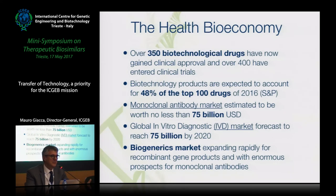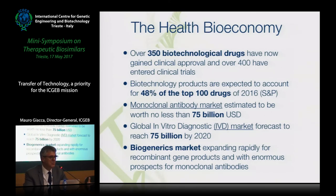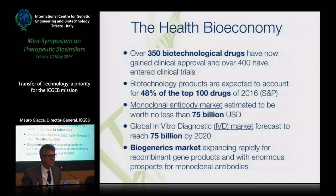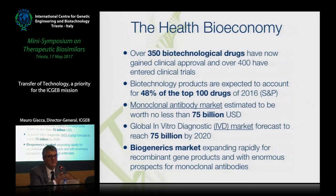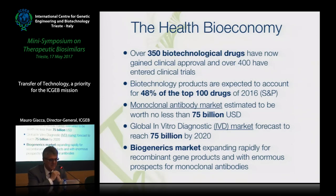However, producing a generic chemical drug is relatively simple — you need a basic chemical production facility and follow a recipe. Producing a generic biological drug, such as a recombinant protein or monoclonal antibody, is much more difficult, because every batch differs depending on conditions, cell, strain, and clone. This whole field is called biosimilars and requires profound know-how. This is exactly what the ICGB has been doing for the last ten or so years, and aims to do even more — generating know-how to be transferred to the pharmaceutical industry in its member states.